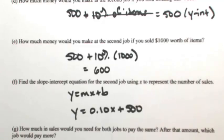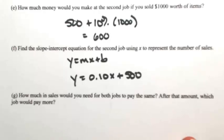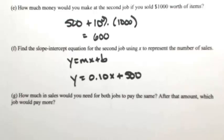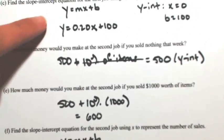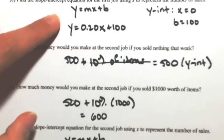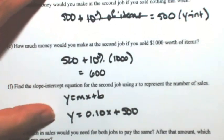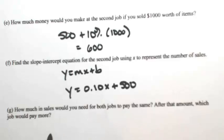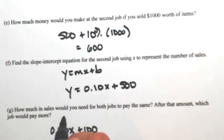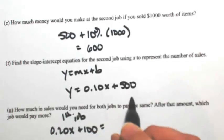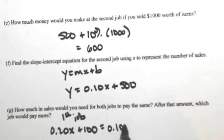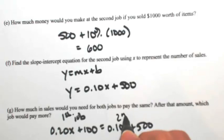Let's tie all this together. How much in sales would you need for both jobs to pay the same amount? And after that, which job would pay you more? To find when they're equal, set the two slope-intercept equations equal to each other: 0.20x + 100 (first job) equals 0.10x + 500 (second job).